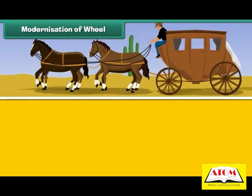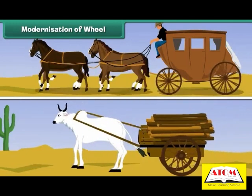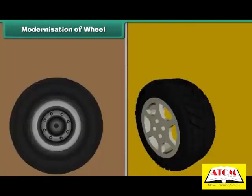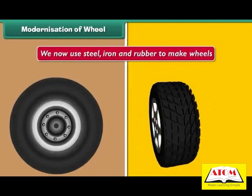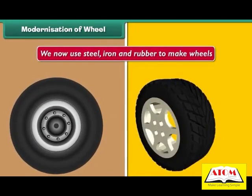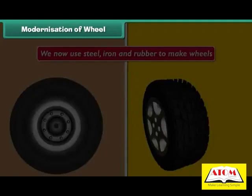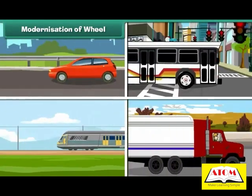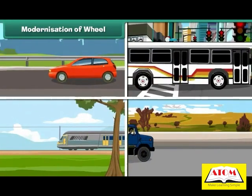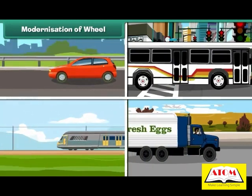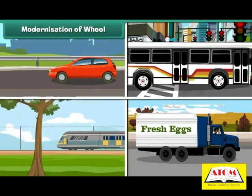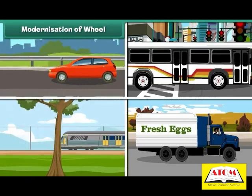Modernization of Wheel. We have come a long way from the days of wooden wheels. We now use steel, iron and rubber to make wheels. Such wheels are strong and they last long. Wheels have made transportation easy. Therefore, wheels are our friends.